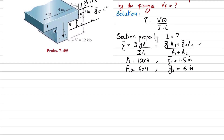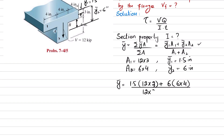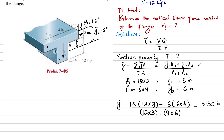Putting all values into the formula: Y-bar equals (1.5 times 12 times 3) plus (6 times 6 times 4), divided by (12 times 3 plus 4 times 6). Calculating this gives Y-bar equal to 3.30 inches. This means the neutral axis passing through the centroid lies at a distance of 3.30 inches from the top. Y-bar equals 3.30 inches.